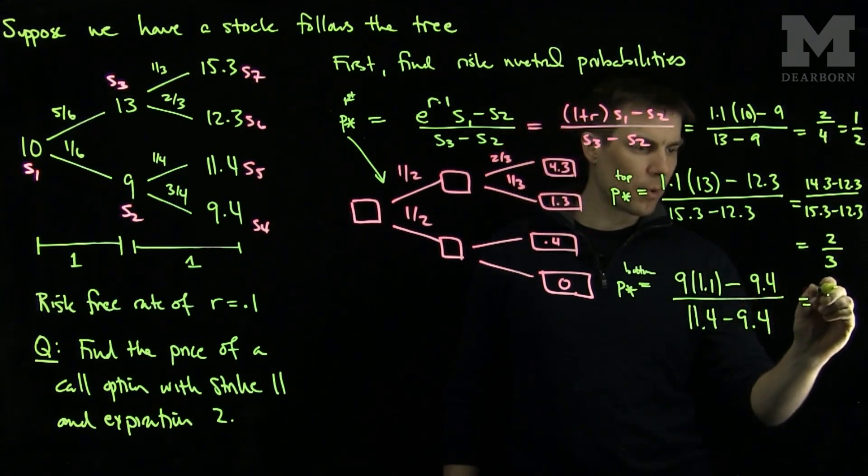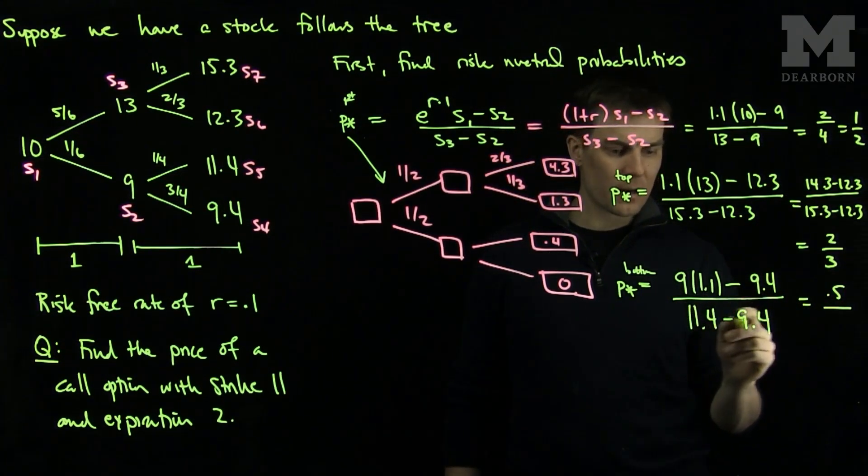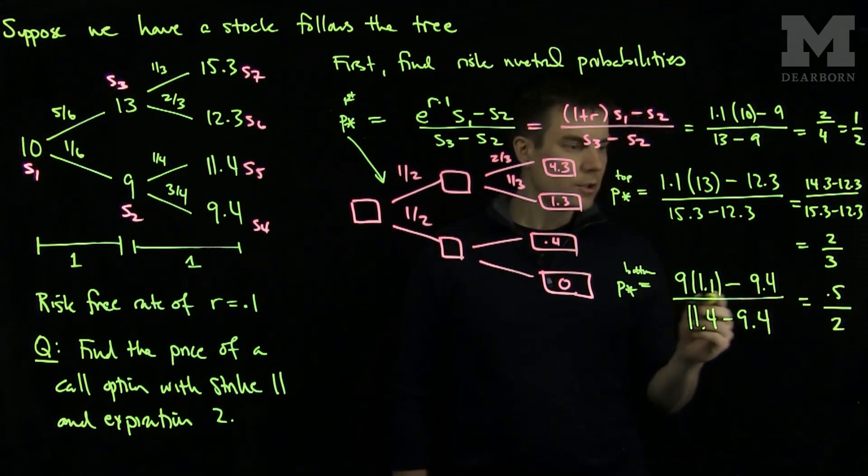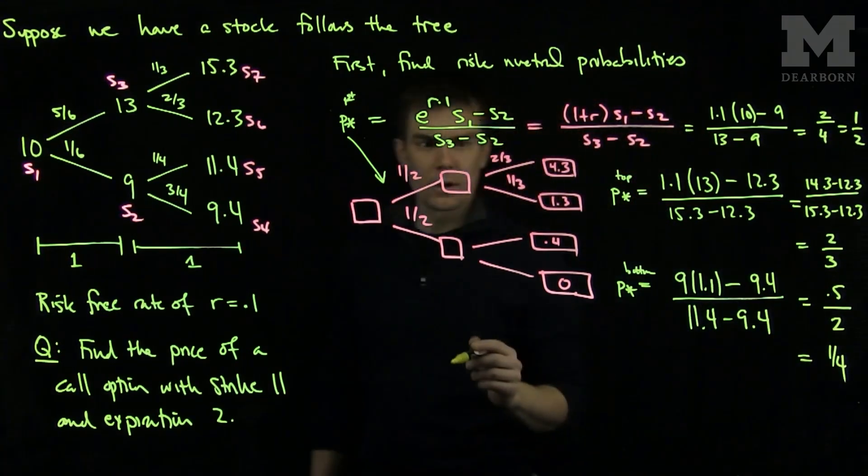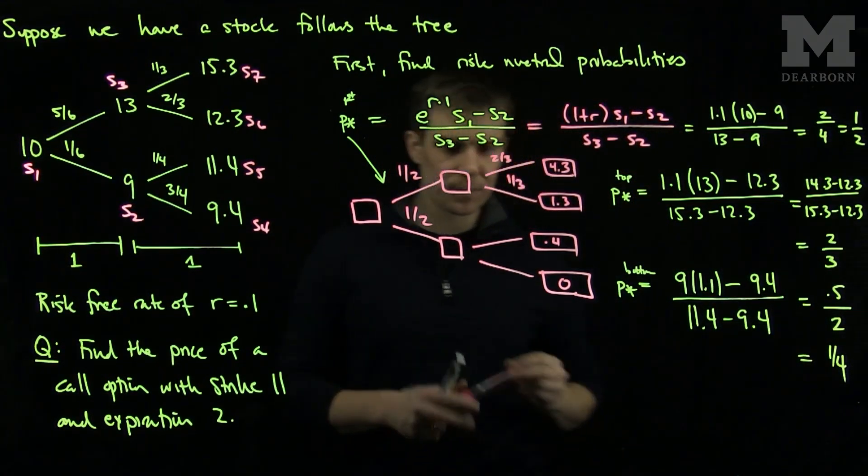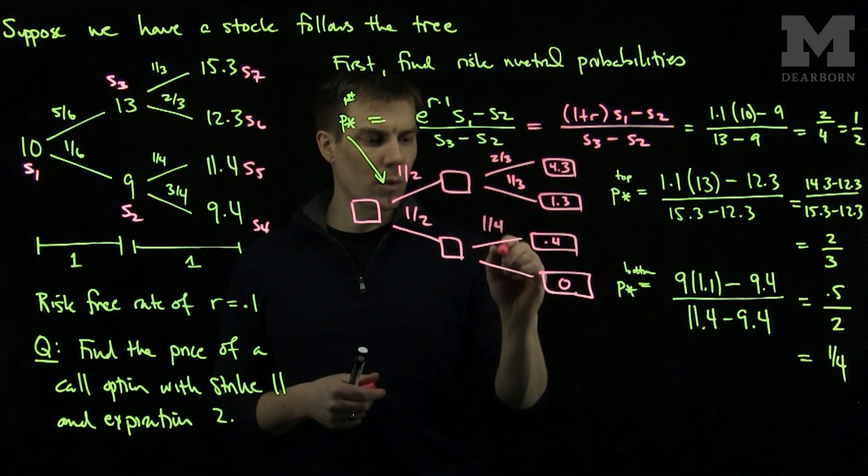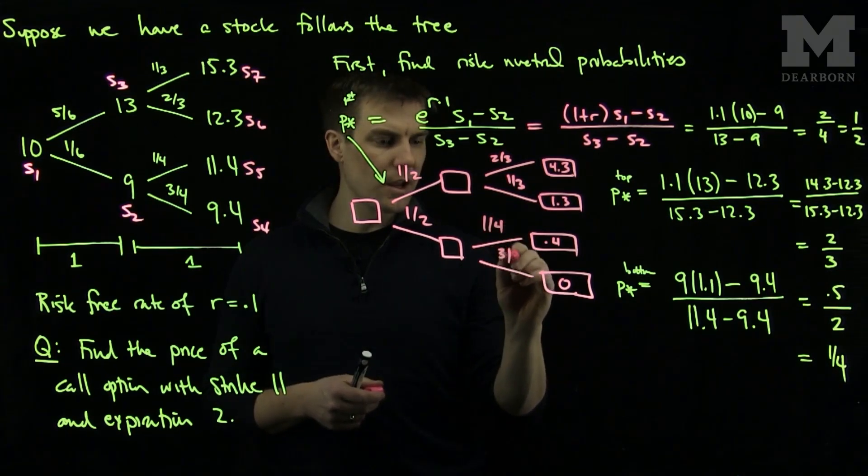We see the top is 0.5 and the bottom is 2. So we see that this is going to be 1 quarter. So the probabilities in this branch will be 1 quarter and 3 quarters.